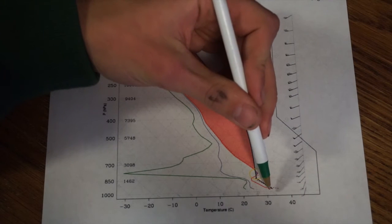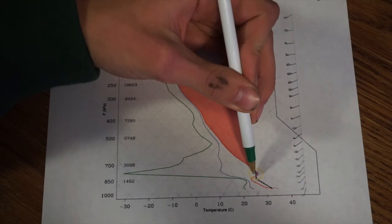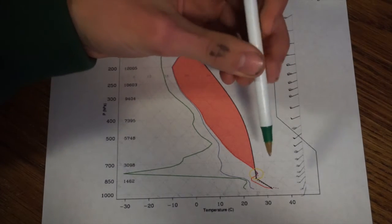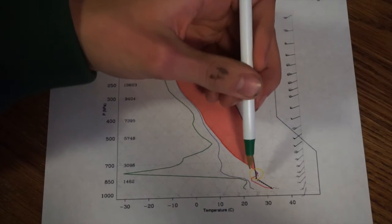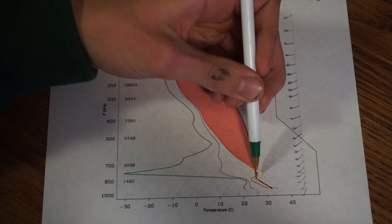Here, you have an air parcel rising. It comes up and it hits this little notch, which is called a CAP, which is a level of inhibition where air parcel does not want to rise. But once it breaks that point, you hit what is called your LFC, or level of free convection.